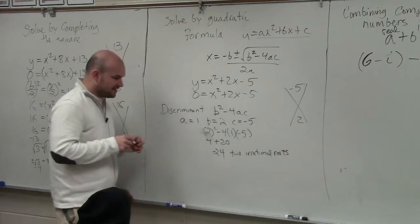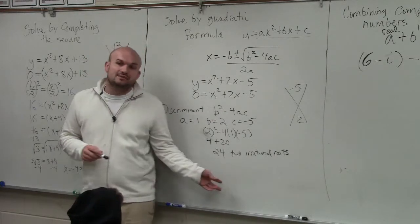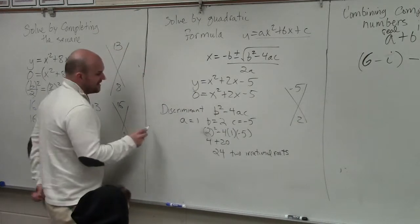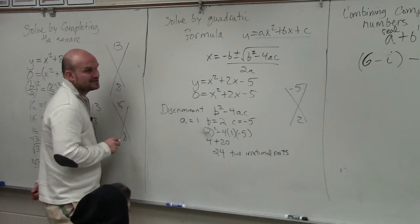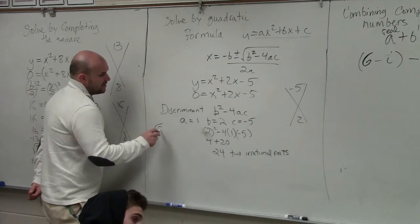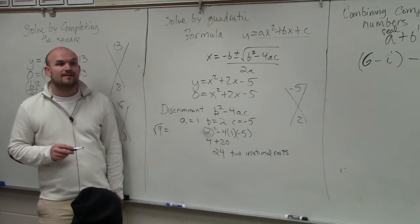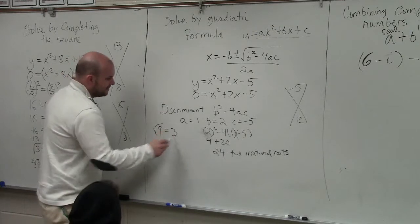And then the last one, ladies and gentlemen, was if your discriminant was 0, then your answer had only one rational root. Now, let's again go back to understanding what is the difference between rational and irrational. So if I had the square root of 9, Molly, do you know what the square root of 9 is? 3, very good.